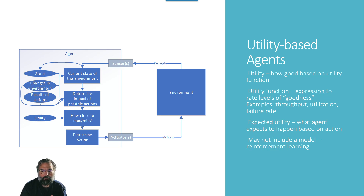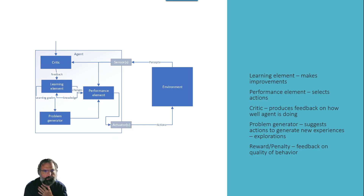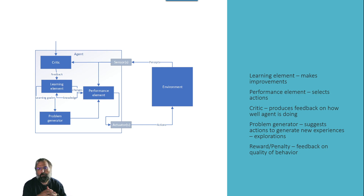It may not include a model — it may simply be reinforcement learning, which is the approach leveraged in the Go scenario where AI implementations beat a Go master. The basic idea is that you don't necessarily know exactly what goal you're trying to reach or how to get there, but you know that if you do this, you get a higher return than if you do something else. You combine taking advantage of things you know while also looking for something better — exploration versus exploitation of your environment. You may also introduce a critique into the process, observing and producing feedback on how well the agent is doing, giving penalties and rewards based upon behavior to improve some performance element.